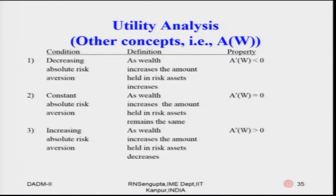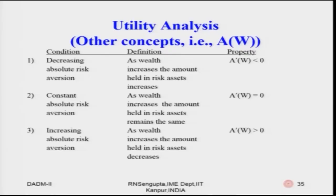Coming back to slide number 35: the mathematical properties are given in the third column. Going row by row — the first condition is that decreasing absolute risk aversion property is true. What does that mean practically? As wealth increases, the amount held in risky assets — or risky decisions — also increases. If that is true, then A prime is less than zero, which relates to loving risk, hating risk, or being indifferent to risk.